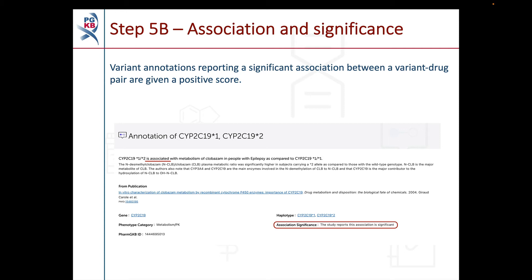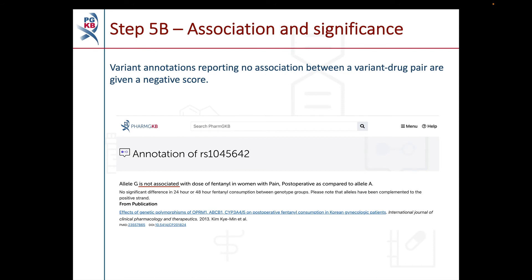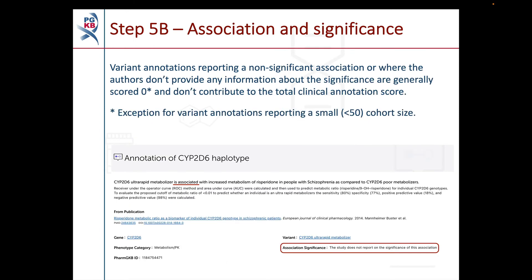Step 5b looks at the association and significance reported in the annotation. Variant annotations which report a significant association between a variant and drug are given a positive score, while annotations which report no association are given a negative score. Annotations where the association is not significant or the paper doesn't comment on significance are given a score of 0. An exception is made for studies with cohorts of less than 50 participants, as many studies on rare alleles are in small cohorts where it's difficult to find a statistically significant association — though this doesn't mean there isn't a valid pharmacogenetic association between the variant and drug being studied.